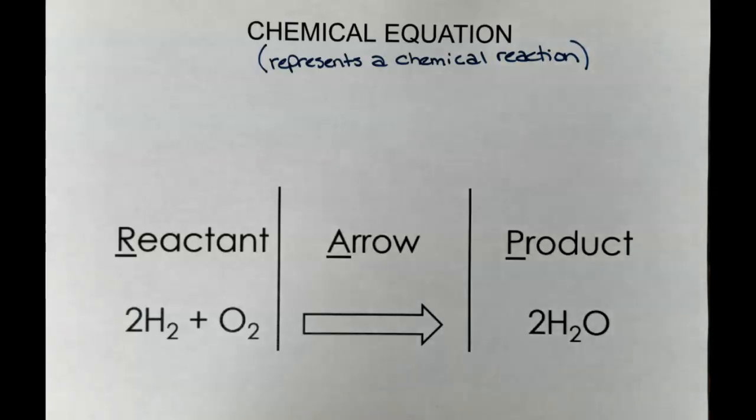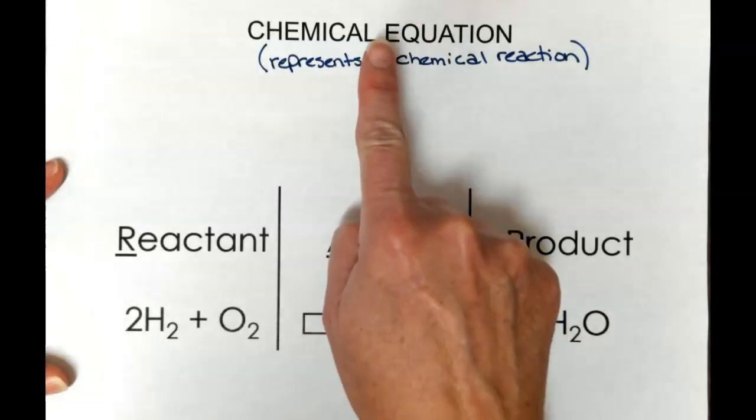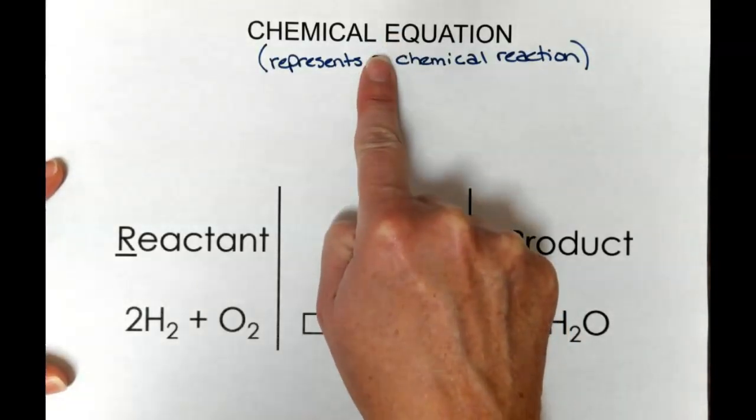So up to this point, we have only looked at elements and compounds and their chemical formulas. The next step is to look at how these elements and compounds interact together to form new substances. So what we're really talking about are chemical reactions. The way we represent a chemical reaction is with what we call a chemical equation.